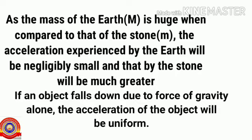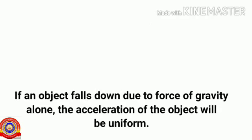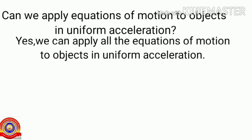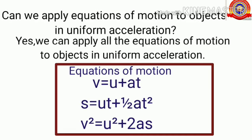If an object falls due to the force of gravity, its acceleration will be uniform. So we can apply all the equations of motion to objects under uniform acceleration. The three equations of motion are: v = u + at, s = ut + ½at², and v² = u² + 2as.